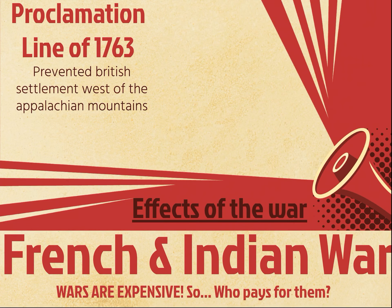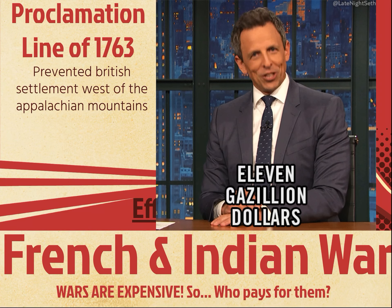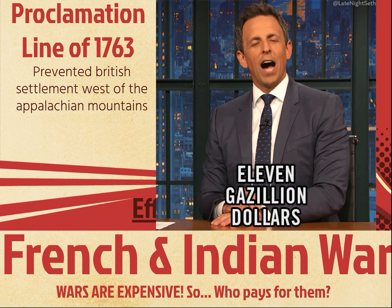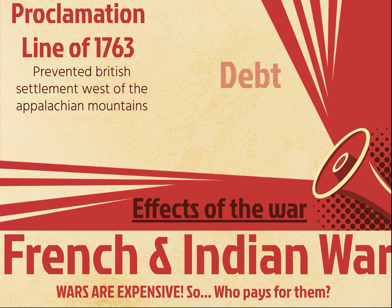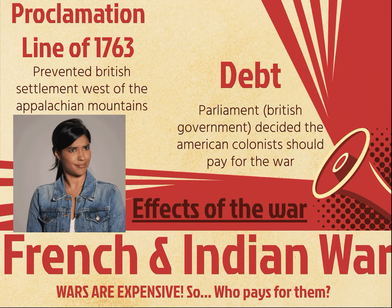Go ahead and go to page 1 of your notes, which is your physical map. On the Appalachian Mountains, go ahead and write in the Proclamation Line, because that was a clear border for colonists. Remember, wars are expensive, so who's going to pay for them? It's going to cause a lot of debt for the British government. Parliament, which is the British government, decided that American colonists should pay for the war because they're the ones that started it by settling too far.